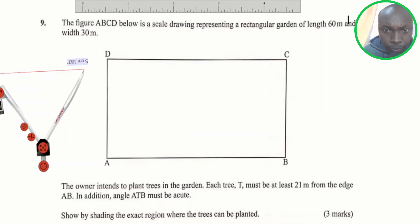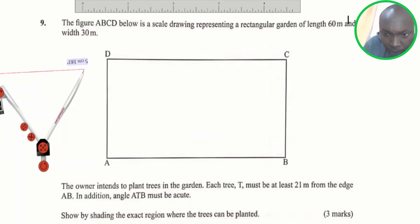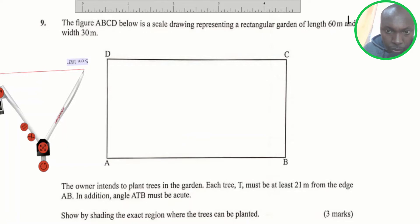The first thing we're going to do is get the scale that is used in centimeters. Since the length given is 60 meters and the width is 30 meters, we need to know — because of the condition that each tree must be at least 21 meters — how many centimeters we're going to use for 21 meters.